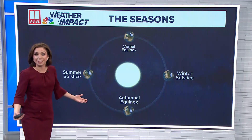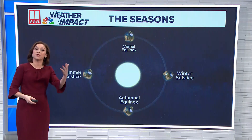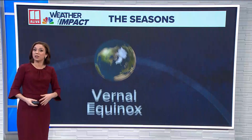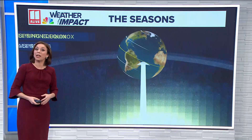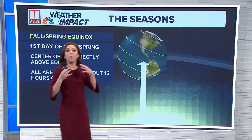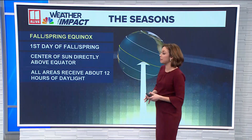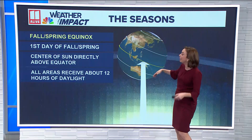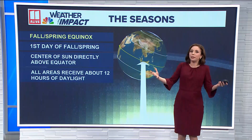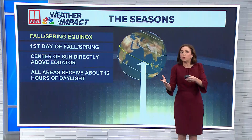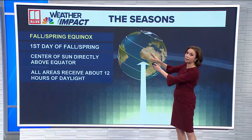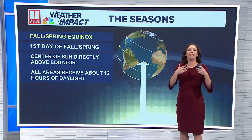That's how we get the seasons. We have the spring and fall equinoxes, and then in the winter and summer we have the solstices. With the fall and spring equinoxes, those are when we have the center of the sun over the equator and generally about equal day and equal night — hence equinox meaning equal.